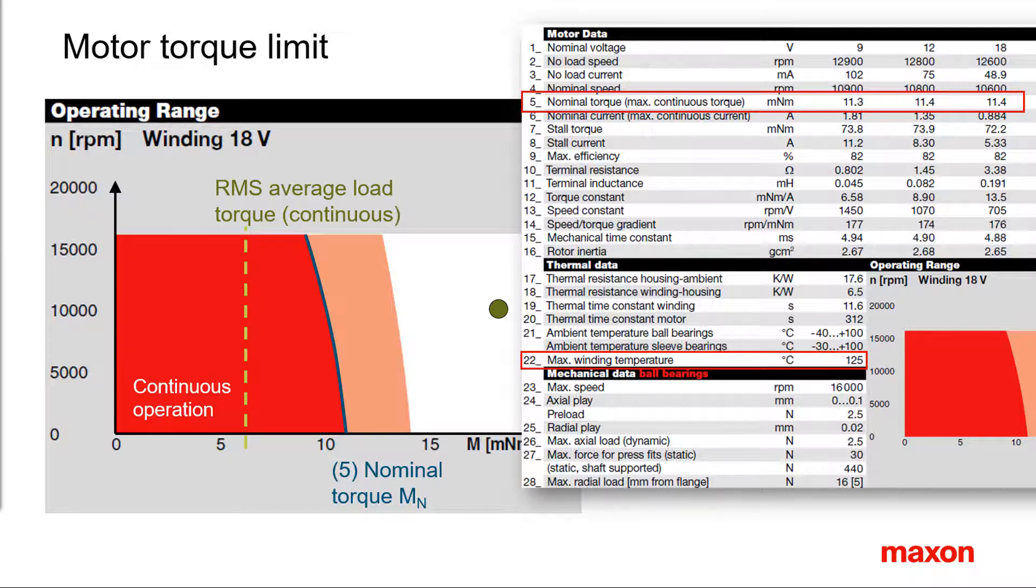The origin of the nominal torque comes from the maximum winding temperature limit. Up to this torque, the motor can be loaded continuously without overheating the winding. Higher torques are possible, but only for a limited amount of time.